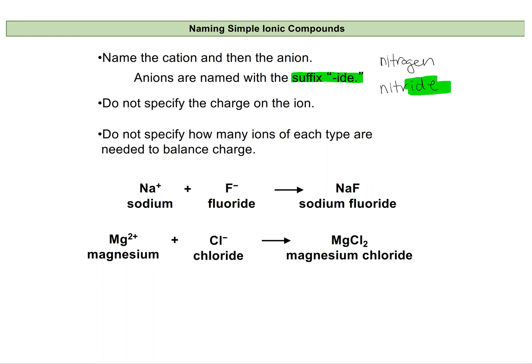So if we have sodium and fluoride coming together to form an ionic bond, we would keep our sodium cation name the same as we would read it on the periodic table. And then our fluorine, which will be our anion, will lose that I-N-E ending and replace it with I-D-E. We get fluoride instead of fluorine.